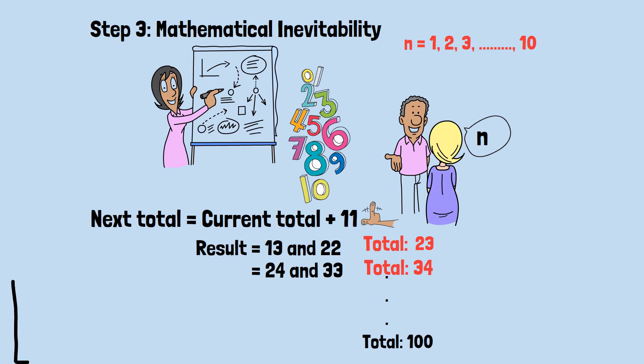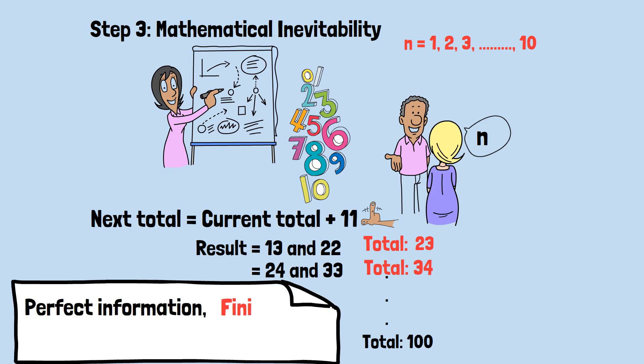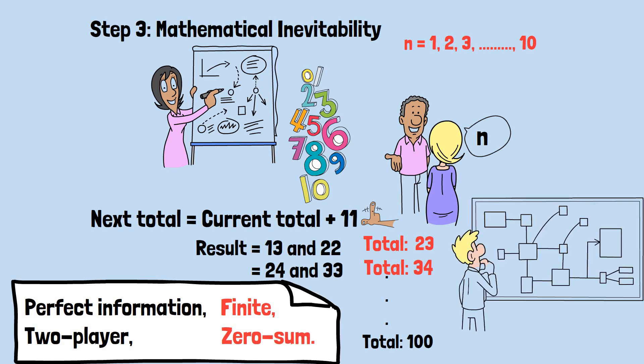What we've discovered is that this particular game has what's called a perfect information, finite, two-player, zero-sum structure, with no chance elements. Game theory tells us that such games always have what's called a solution, meaning there's always an optimal strategy that guarantees the best possible outcome.